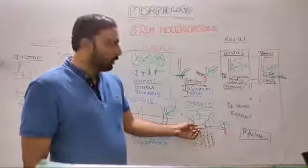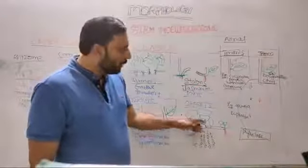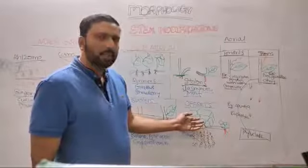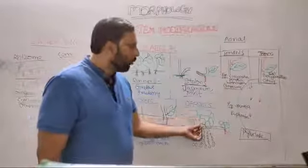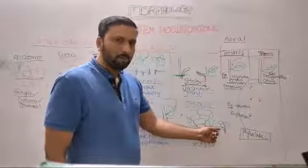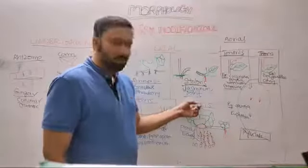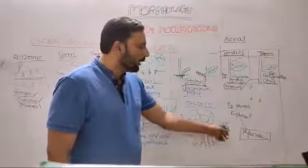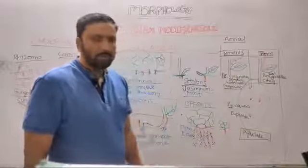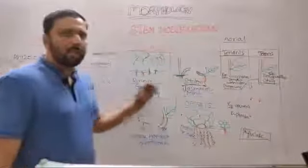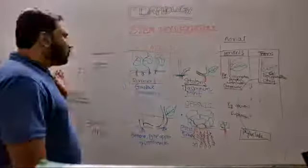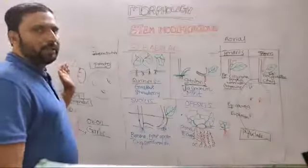In offset, the stem is reduced into a disc-like structure; below it adventitious roots are present, above it leaves are arranged in a rosette manner. From this disc-like stem there is elongation of an internode called offset, which again forms leaves and roots — helpful for vegetative propagation. Subarial stem modifications also help in vegetative propagation as well as food storage and protection from herbivores.